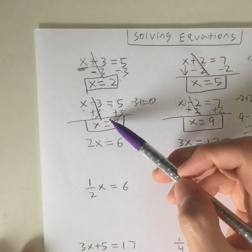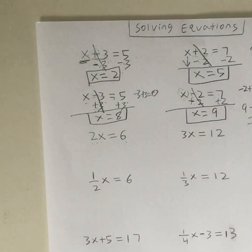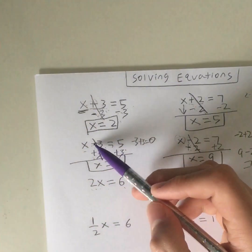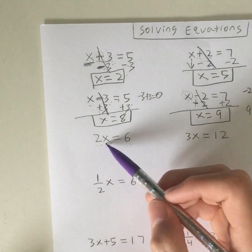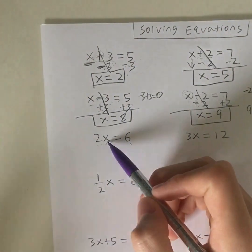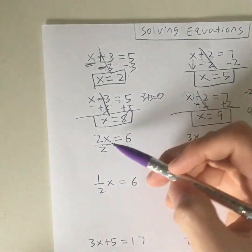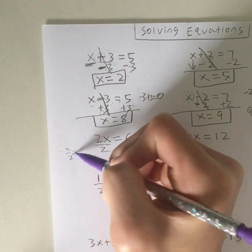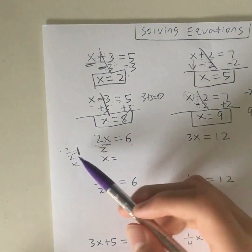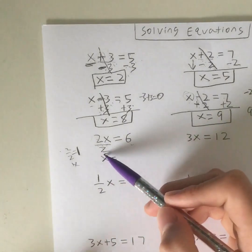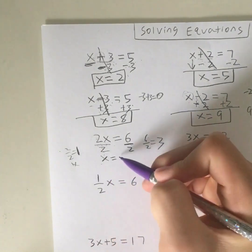Now let's move on from addition and subtraction to multiplication. You have 2 times x is equal to 6. Remember, we use the opposite operation — the opposite of multiplication is division. So instead of adding a number, we're going to divide. We divide 2x by 2, because 2 divided by 2 is 1, and 1x is just x. Whatever we do on the left, we do on the right — we also divide by 2. 6 divided by 2 is 3, meaning the value of x is equal to 3.